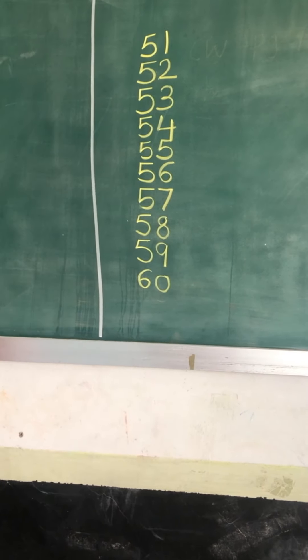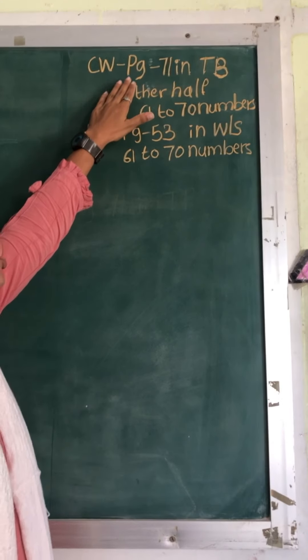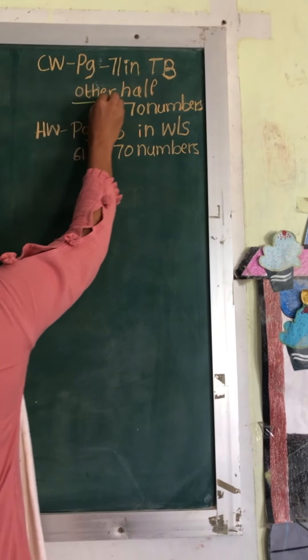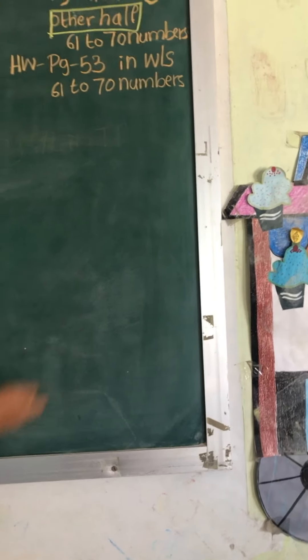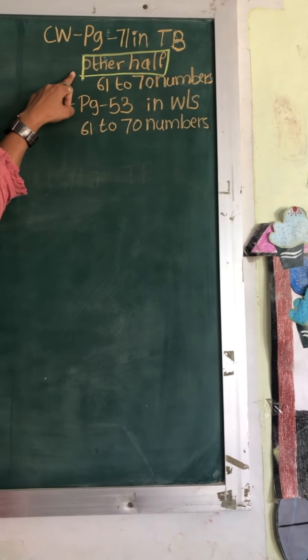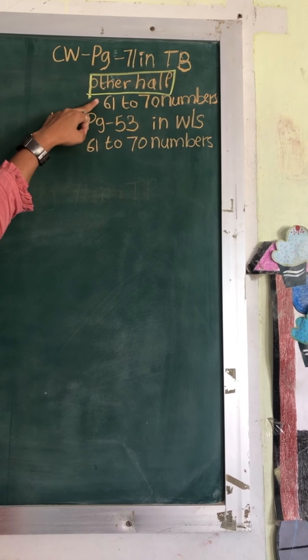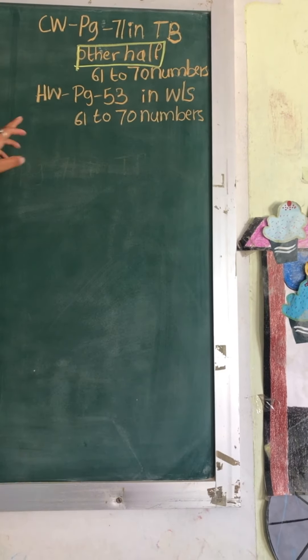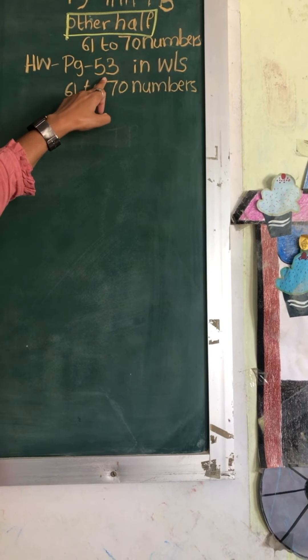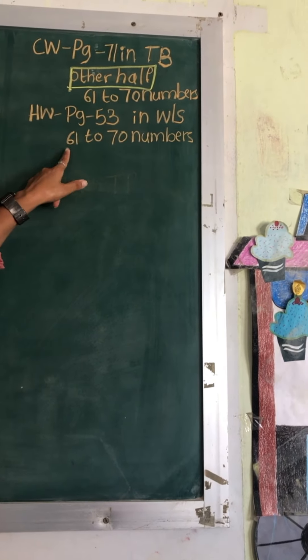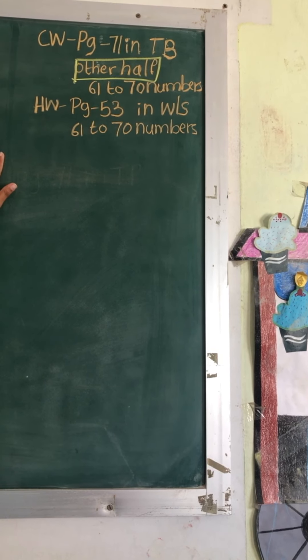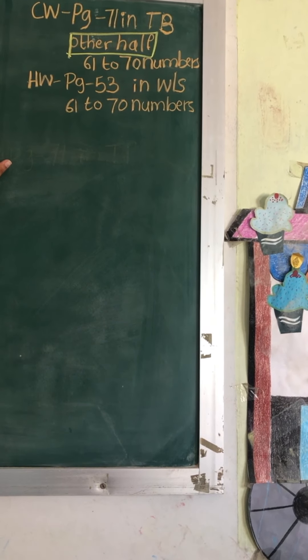This is the revision of the last video. Today we are writing the same page — page number 71 in the textbook, the other half. In the last video we covered 51 to 60. In this video we are writing the same page but we are writing numbers from 61 to 70. And homework is page number 53 in the worksheet, numbers 61 to 70.